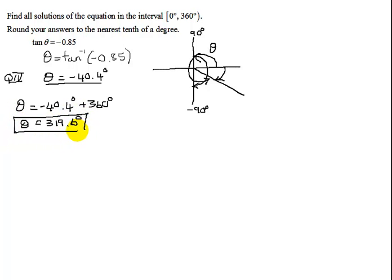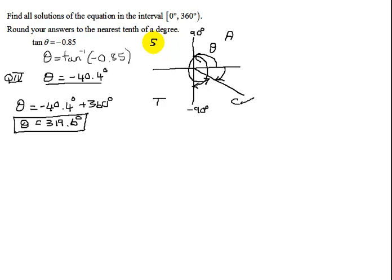So theta equals 319.6 degrees. Now I've got one solution that lies in the range I want. But can the tangent be negative in another quadrant? Remember the mnemonic 'all students take calculus': tangent is positive in quadrants one and three, so it's negative in quadrants two and four. I found the quadrant four angle. I need to go back and find a quadrant two angle, using reference angles.